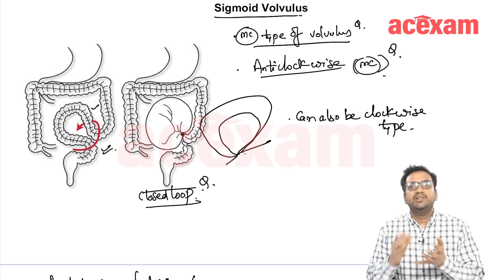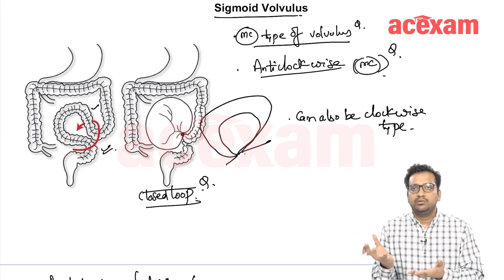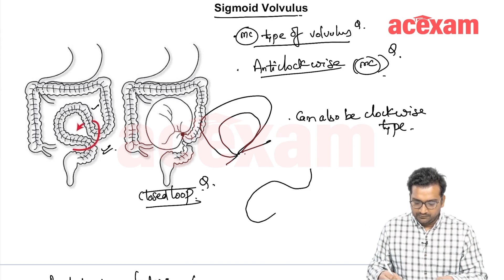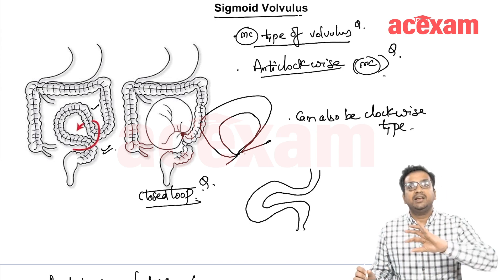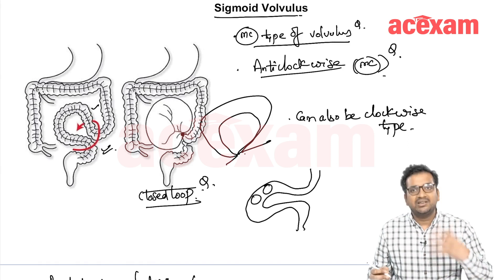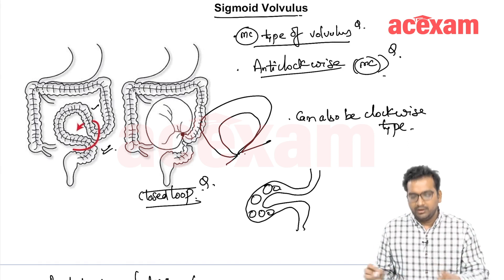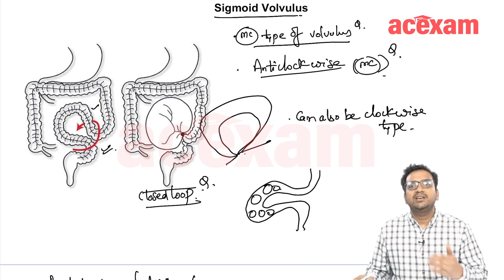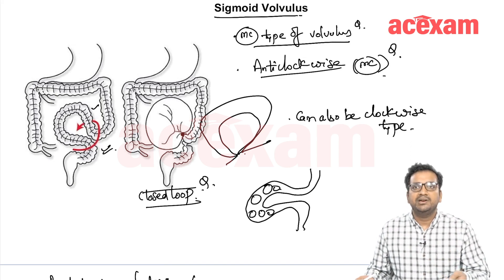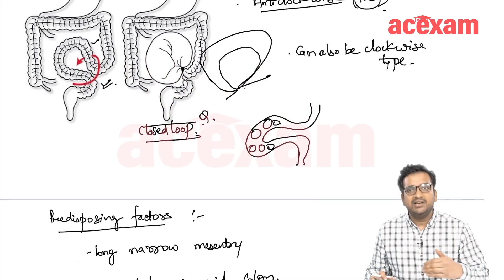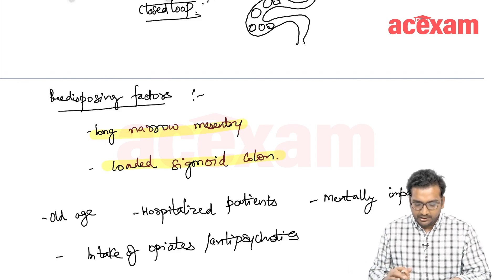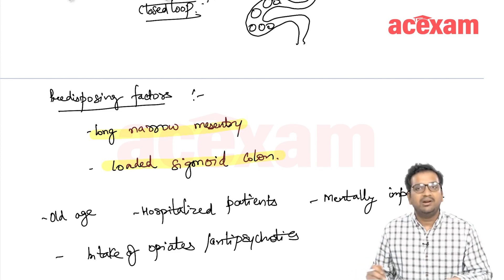The predisposing factors include a large dilated loaded sigmoid colon with a very long mesentery, which can twist. Constipation with a lot of fecal matter in the sigmoid colon is also a predisposing factor. It is generally seen in patients who are hospitalized and taking neurology medicines or antipsychotic medicines. So the predisposing factors are: a long narrow mesentery, a loaded sigmoid colon, old age, hospitalized patients, mentally impaired individuals, and those taking opiates or antipsychotics.